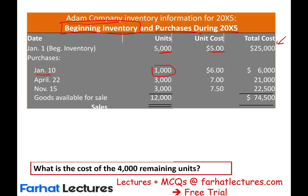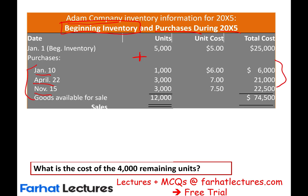On January 10th, they bought 1,000 units at $6. On April 22nd, they bought 3,000 units at $7. And on November 15th, they bought 3,000 units at $7.50. When we take beginning inventory plus the purchases, we get goods available for sale — meaning how many units and what's the total cost invested in inventory. The total units for the whole year is 12,000, and the total cost is $74,500.